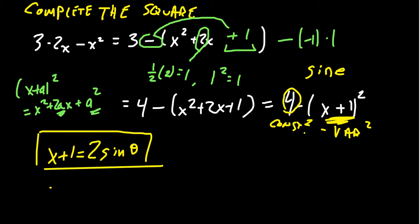So some things to be aware of. What's dx? Well, if we take the derivative of that boxed equation implicitly, the left-hand side just becomes a dx. The right-hand side becomes a 2 cosine theta d theta. We're going to need that for our substitution.